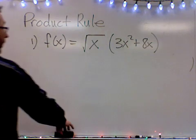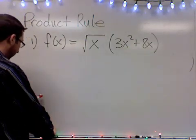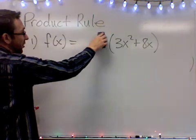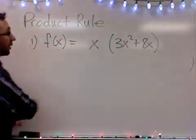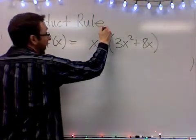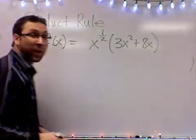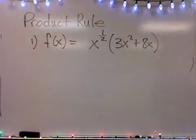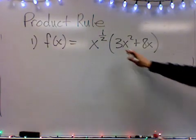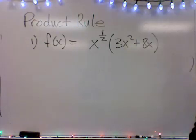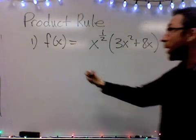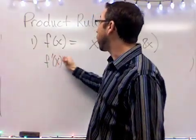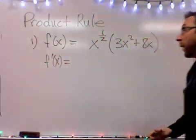We're going to find the derivative of this entire thing. Before we do that, we're going to change that square root and make it x to the half power, because they mean the same thing. Now you could distribute that through and add the exponents and use the power rule to get the answer, but I want to show you an example of using the product rule to get there.